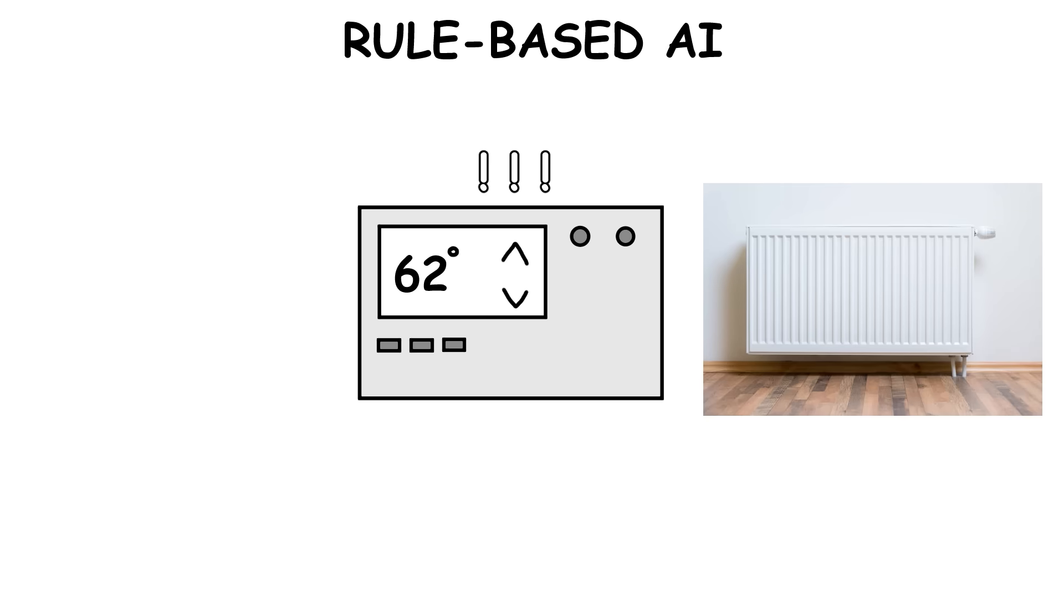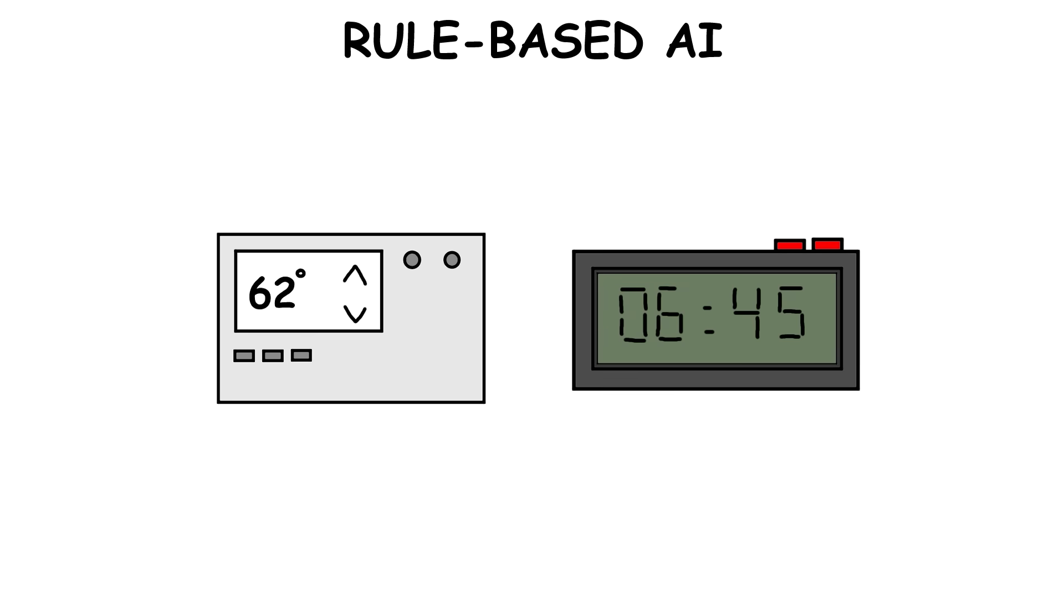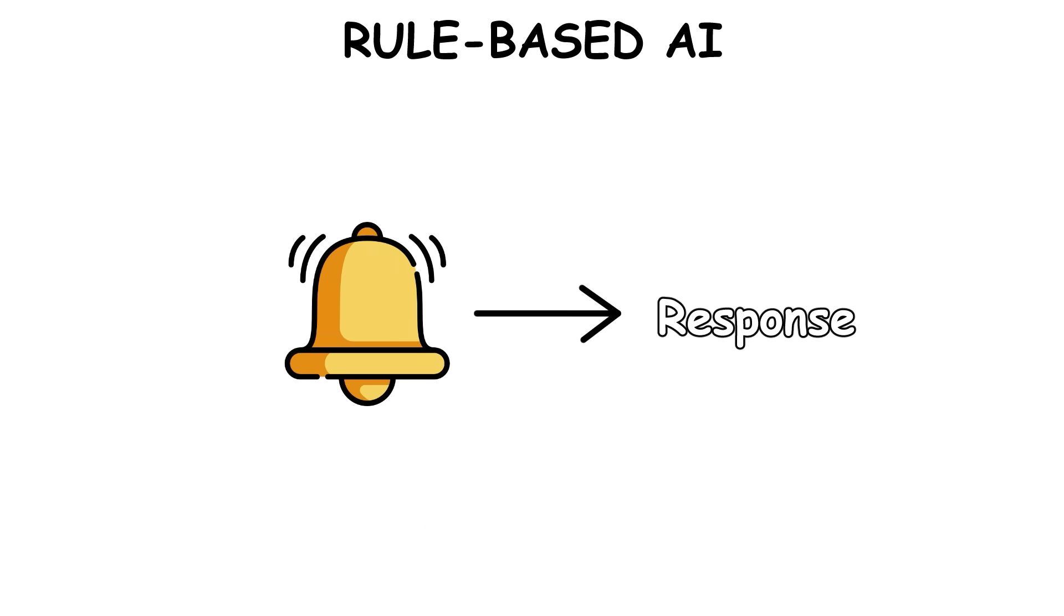For example, a thermostat turns on the heater when it senses the temperature is too low and an alarm clock rings at a set time. These kinds of devices don't change or learn, they just respond to certain triggers.